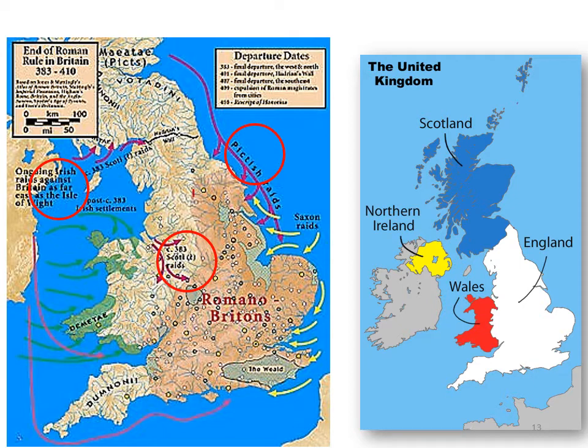The map shows us in circles the places from which the Picts, the Scots, and the Irish attacked Roman Britain. These were fierce pagan tribes untouched by Christianity. Aggression from these tribes continued for years until 449 — a very critical year — when something happened that triggered the coming of the Anglo-Saxon tribes.